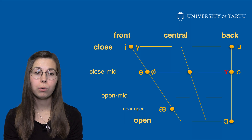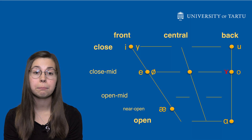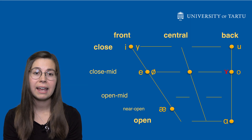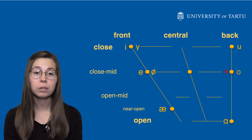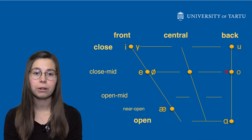To pronounce this vowel, your tongue is positioned back and halfway between a close and mid vowel, at the same height as õ and ö. Your throat is slightly closed and your lips are unrounded.